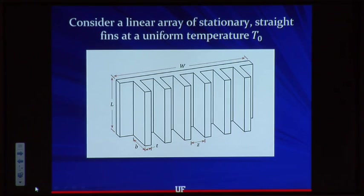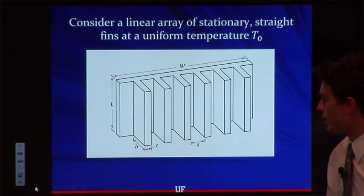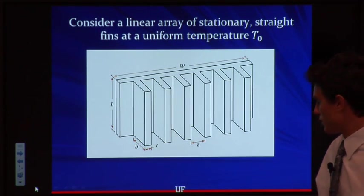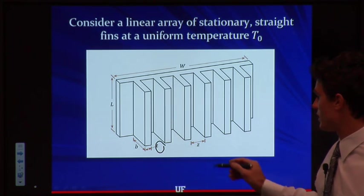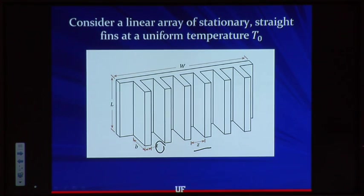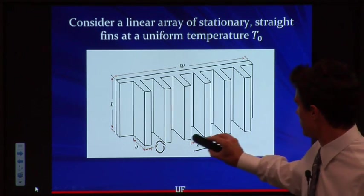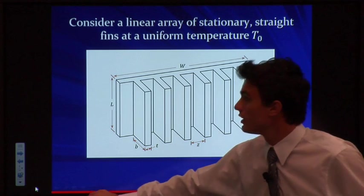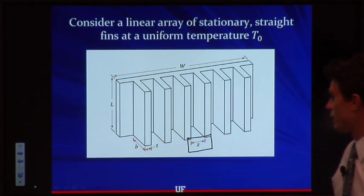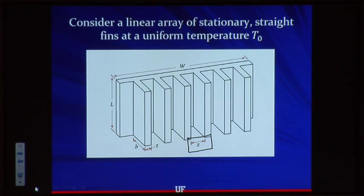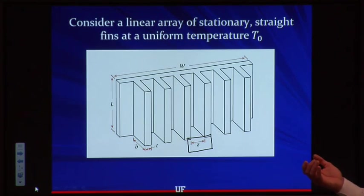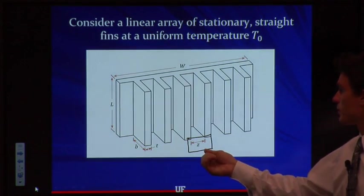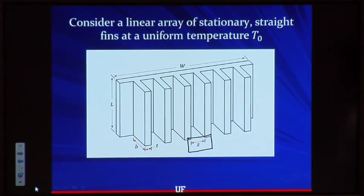We're going to look at a somewhat idealized system of a linear array of stationary straight fins, considering the whole system at a uniform temperature T naught — meaning the heat sink is a perfect conductor. Its dimensions: W is the width, L is the length of the channels, B is the height of the channels, T is the thickness of the fins, and Z is the width of the channels through which we'll have flow. This lecture will focus on finding an optimum value for Z, which is the most important variable in the geometry of our heat sink.